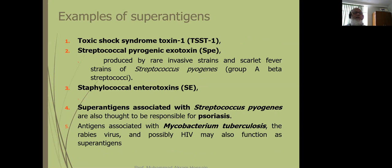Examples of superantigens include: toxic shock syndrome toxin-1 from Staphylococcus aureus, Streptococcus pyogenes toxin, Staphylococcus enterotoxin, superantigen associated with Streptococcus pyogenes which is also thought to be responsible for psoriasis, and many other examples.